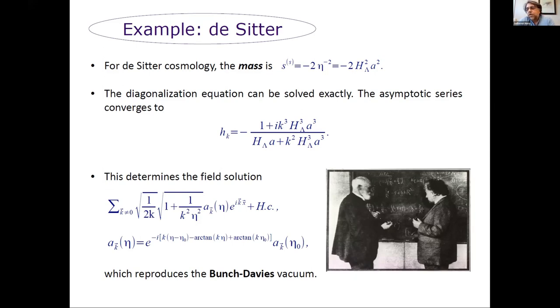So what is the physical meaning of all this? We have a criterion now to select a unique vacuum state. But what does it correspond to? Well, in the case of Minkowski, in which the background-dependent mass is constant, one can see that the state that one picks out in this way is nothing but the standard Poincaré vacuum for Minkowski spacetime.